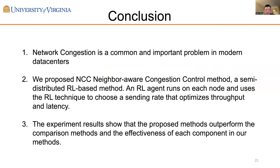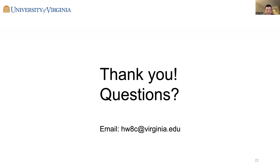To conclude: network congestion is a common and important problem in modern data centers. We propose a semi-distributed reinforcement learning-based method where an RL agent runs on each node and uses reinforcement learning to choose actions that optimize throughput and latency. Different from previous algorithms, the RL algorithm collects network information from all end hosts under the same switch and conducts congestion control in a semi-distributed manner. We conduct comprehensive experiments in a real implementation, and the results show that NCC outperforms other comparison methods in average flow completion time as well as other measures of congestion. Thank you — if you have any questions, please email the address on this slide.